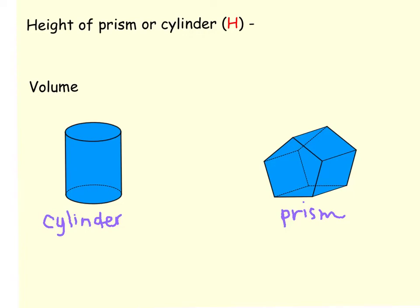In this video, we're going to talk about volume of prisms and cylinders. What we see here is a cylinder and a prism. This happens to be a pentagonal prism because the base is a pentagon.